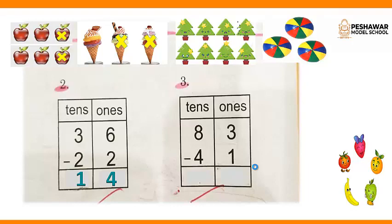Next, we have tens and ones. First we solve ones. 3 minus 1 — we have 3 balls minus 1, then we get 2. 3 minus 1 is equal to 2. Next, we have 8 trees, we minus 4 from it: 1, 2, 3, 4. 8 minus 4 is equal to 4. We have 4 trees here. So 83 minus 41, we get 42.